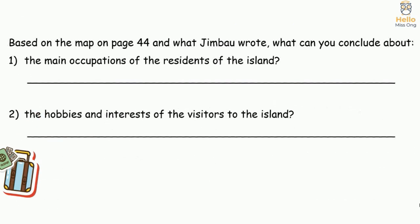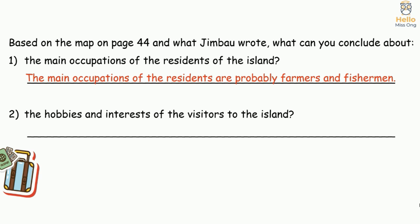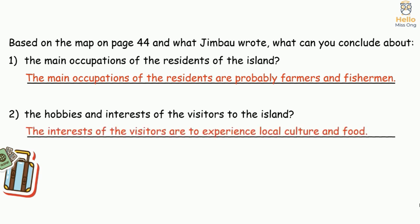Now answer the questions based on the map on page 44 and what Jimbao wrote. What can you conclude about: one, the main occupations of the residents of the island; and two, the hobbies and interests of the visitors? Sample answers: the main occupations of the residents are probably farmers and fishermen. The interests of the visitors are to experience local culture and food.